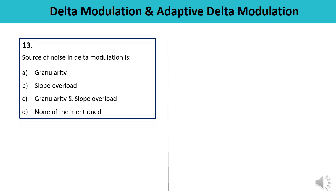Question 13: The sources of noise in Delta Modulation are — granularity, slope overload, granularity and slope overload, or none of the above? The sources of noise are granular noise (idle noise) and slope overload noise. So the answer is C — both granularity and slope overload.